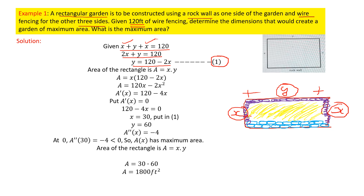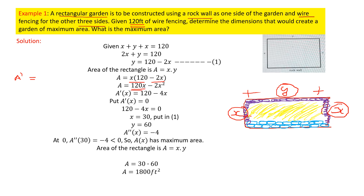We know that the area of the rectangle is given by A equals x times y, that is length multiplied by breadth. So I will keep x as it is and substitute y with 120 minus 2x. This gives A equal to x times (120 minus 2x), which expands to 120x minus 2x squared. Now let me find the first derivative: A dash equals 120 minus 4x.